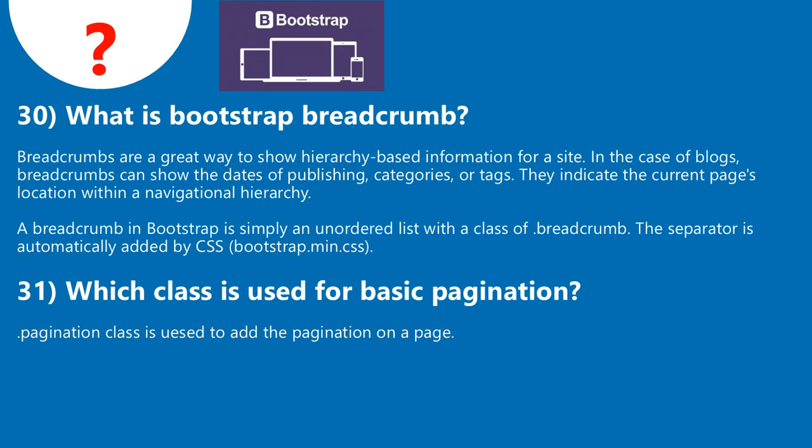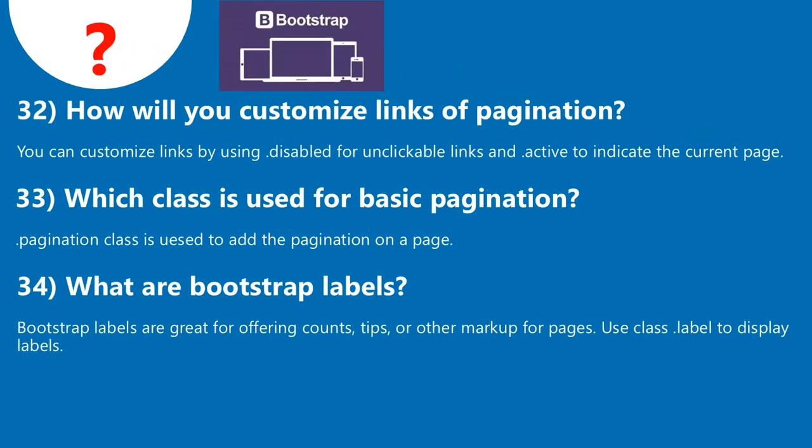Question 31: Which class is used for basic pagination? The .pagination class is used to add pagination on a page. Question 32: How will you customize links of pagination? You can customize links by using .disabled for unclickable links and .active to indicate the current page.